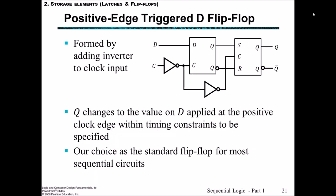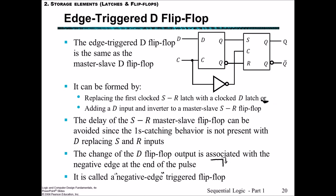In a positive edge-triggered flip-flop, the difference is the addition of an inversion gate to the clock, and in this way Q changes to the value on D applied at the positive edge within timing constraints — that is where the clock changes from 0 to 1. The positive edge-triggered flip-flop is the standard flip-flop choice for most sequential circuits, so this is the one you should most understand, but it's good to understand the difference between positive and negative edge-triggered, and how these flip-flops solve both the latch timing problem and the one's catching issues.